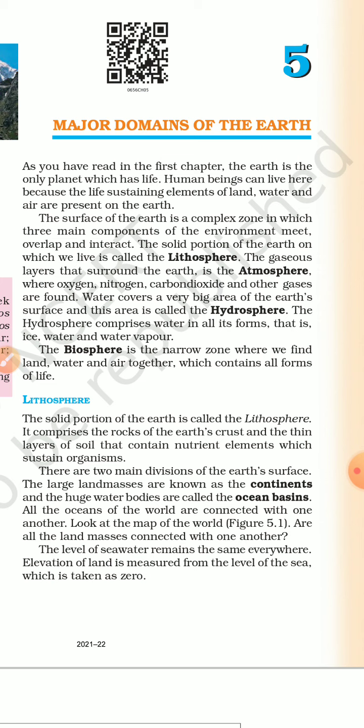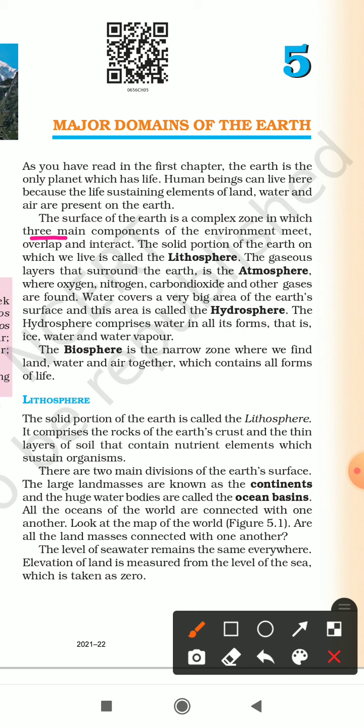The surface of the Earth is a complex zone in which three main components of the environment meet, overlap and interact. The first is the lithosphere. It is the solid portion of the Earth on which we live, or in easy language, we can say the land on which we live.